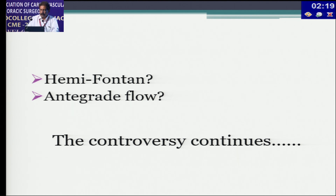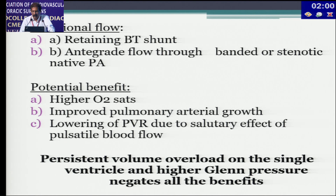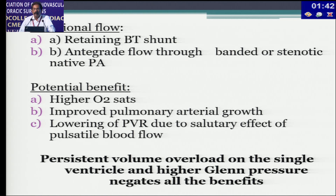Regarding Hemifontan at stage two — don't do it, even if your cardiologist asks. The controversy about antegrade flow during stage two continues. Additional flow may be retained via a restrictive or antegrade flow through a banded or native pulmonary valve. Potential benefits include higher O2 saturation, improved pulmonary arterial growth, and lowering of PVR due to the salutary effect of pulsatile blood flow. However, persistent volume overload on the single ventricle and higher Glenn pressure negate all these benefits.